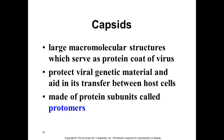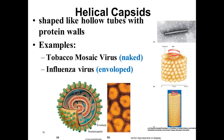Capsids are large macromolecular structures made up of multiple proteins organized into a much larger macromolecule. As any coat would, it helps protect the precious nucleic acid. For naked viruses, the protein coat is what comes in contact with the host cell it's going to invade. For enveloped viruses, it's the proteins associated with the envelope. The individual proteins are referred to as protomers.